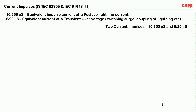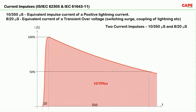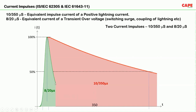Looking at the graph: the 10/350 microsecond impulse goes from 0 to 100% of its peak value in 10 microseconds, and from 100% to 50% of its peak value in 350 microseconds — hence it is called the 10/350 waveform. Similarly, the 8/20 waveform reaches its peak in 8 microseconds and decays to half its peak in 20 microseconds. The lightning impulse has very high specific energy and charge, so it creates more damage than an 8/20 microsecond impulse.